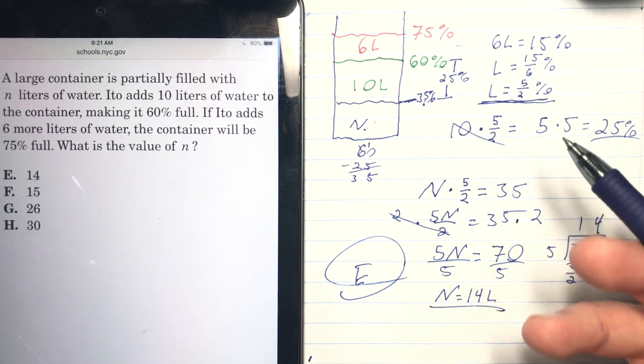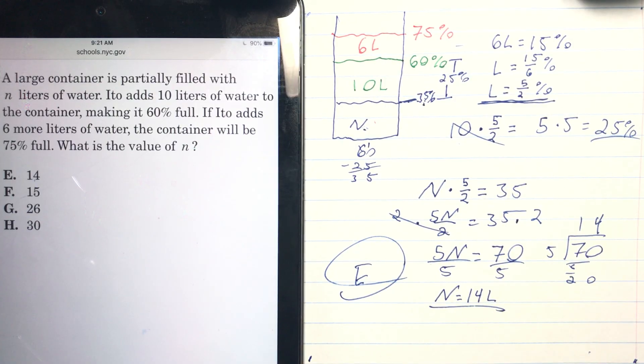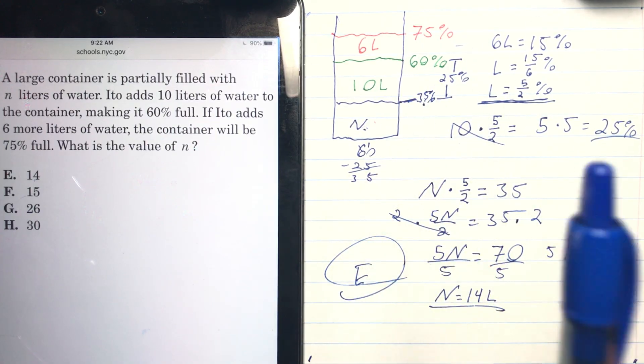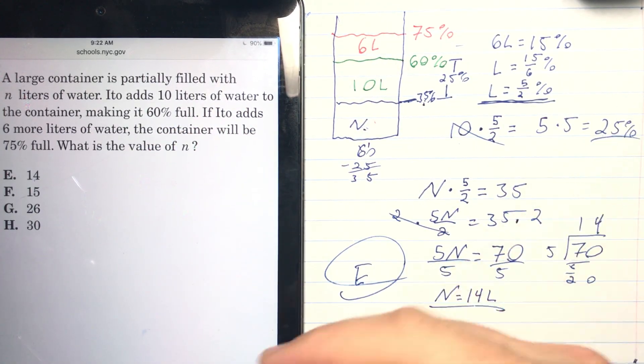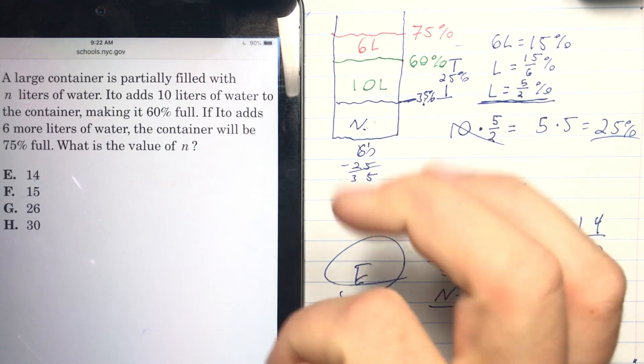Make sure that we're answering the question. Our answer is E, 14 liters. So that's how you do this one. It is a pretty tricky one. I hope this all makes sense to you. If you have any other questions about the math section or whatever, hit me up. As always, like, subscribe, tell your friends about the channel, and have a good one.